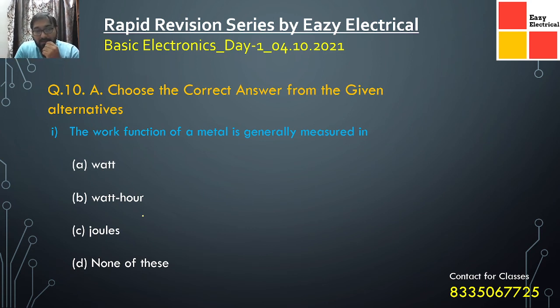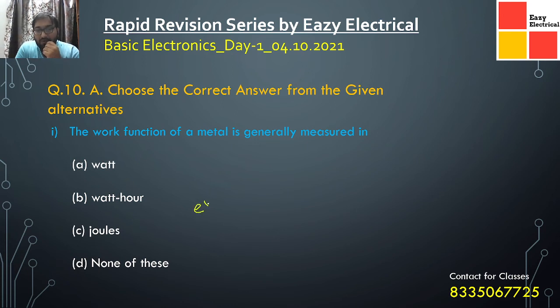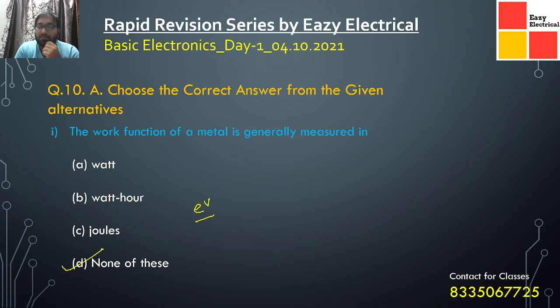The work function of a metal is measured in electron volts. Looking at the given options, none of the listed options are correct — the unit of work function is the electron volt. So 'none of this' is the correct answer, as electron volt is the proper unit for measuring the work function of a metal.